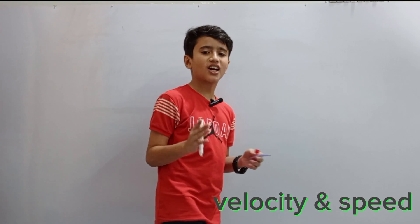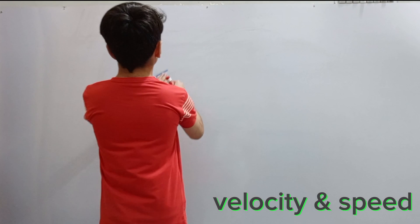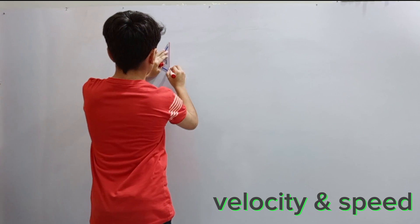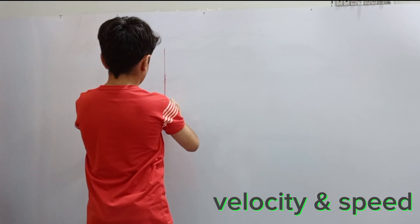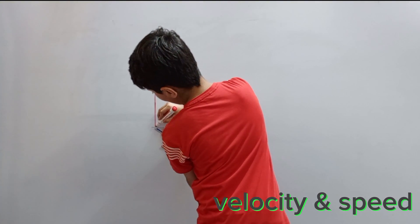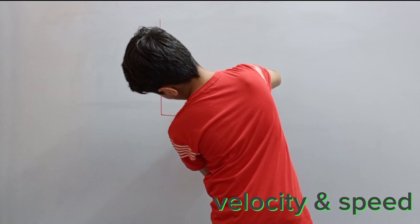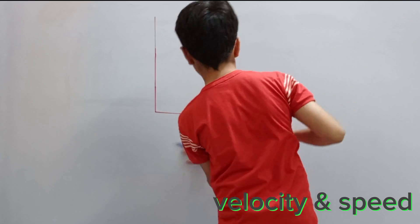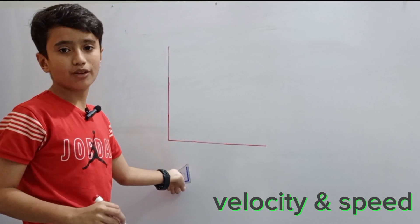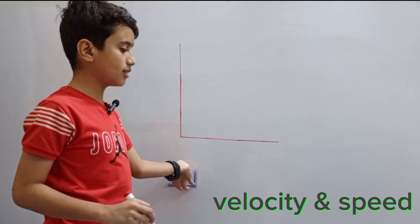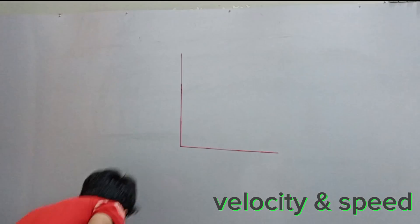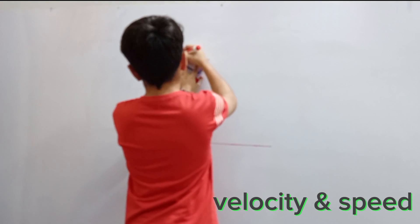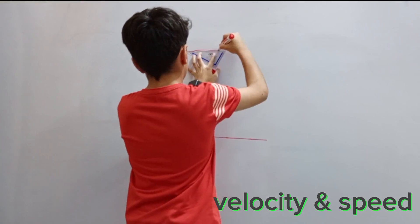Today we are going to be understanding what time and velocity does. So it's simple. Let me start off with a small graph. I'm not using big scientific rulers; we can keep doing it with this. We have a simple graph system here, not a full graph to be exact. So let me show you what this means and draw some small lines on this graph.